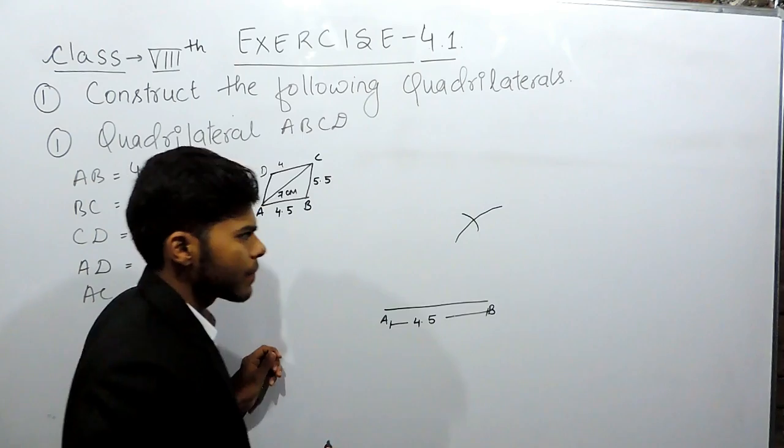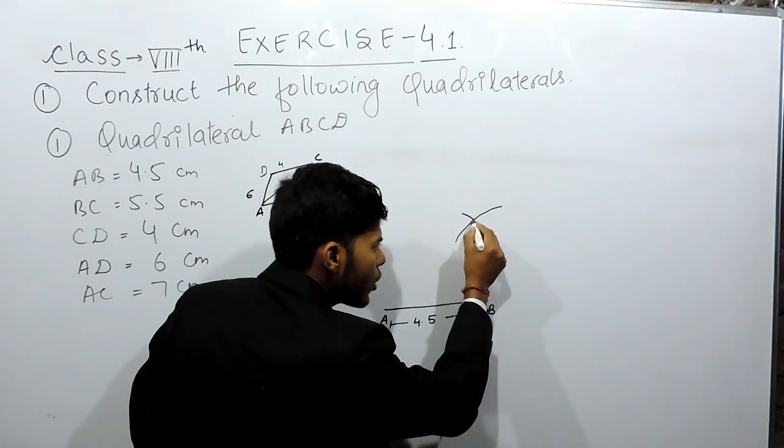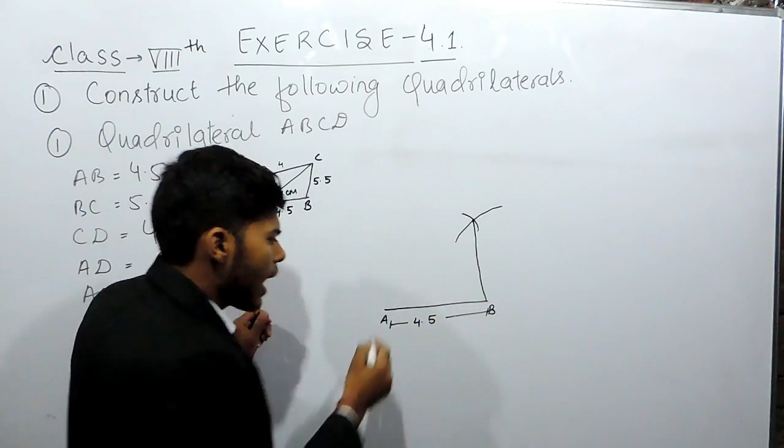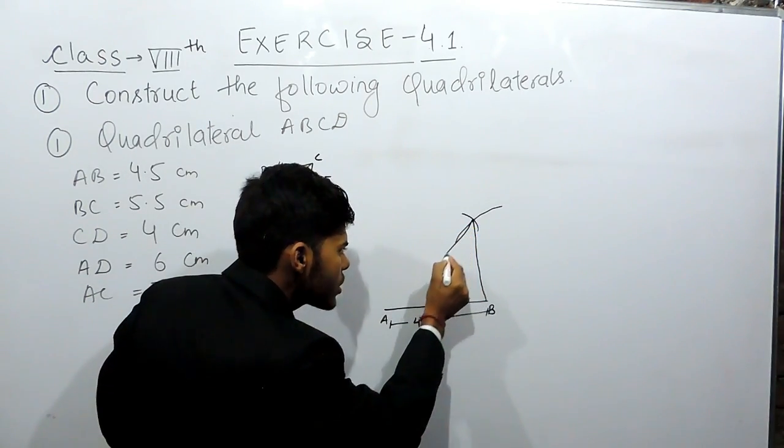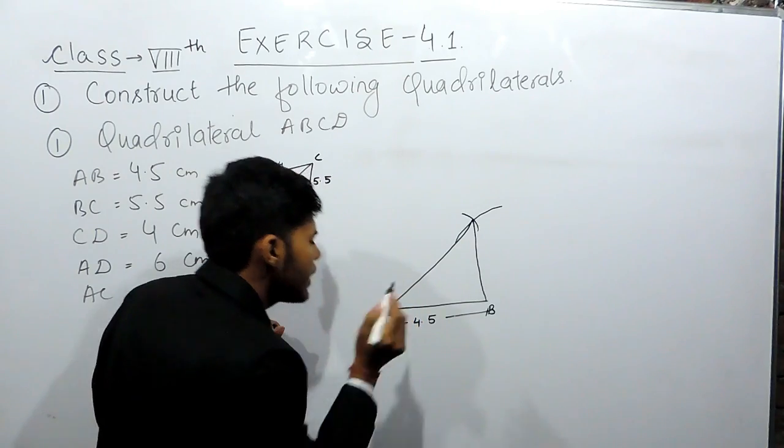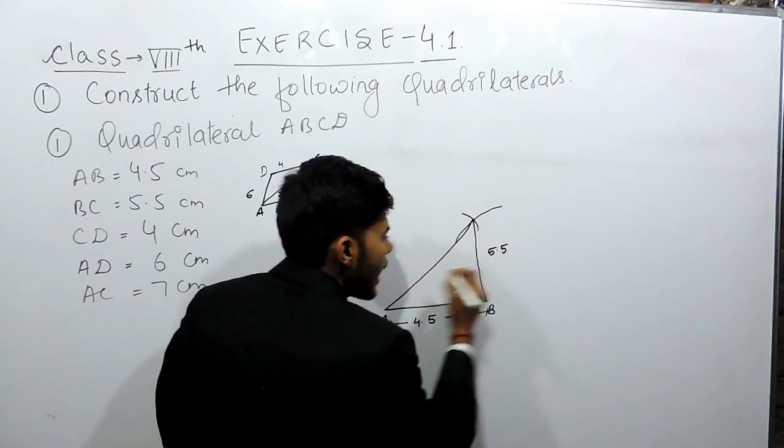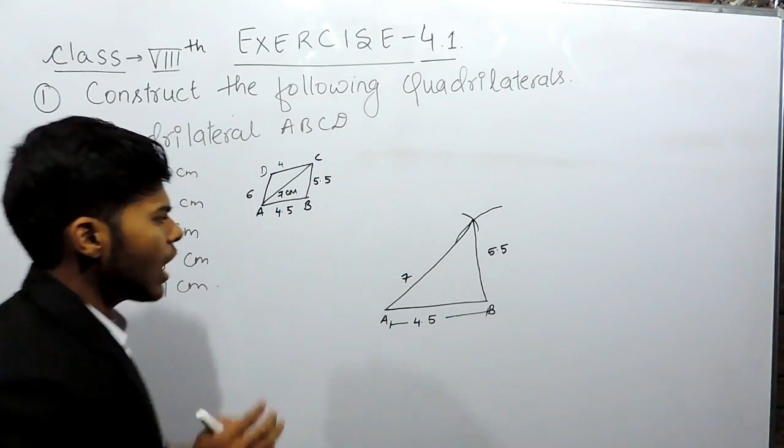Now, join this point because you kept the compass at point B and this point because you also kept the compass at point A. So, this will be 5.5 cm and this will be 7 cm.